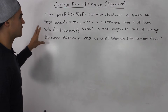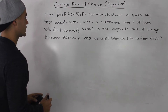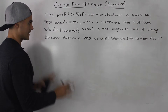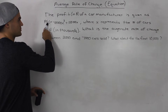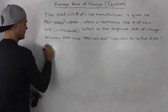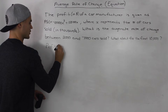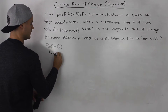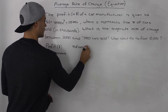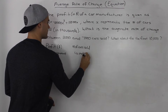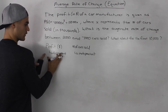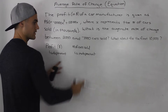Let's start with the first question. The first thing you want to figure out in a question like this is what's the dependent variable and what's the independent variable. Since profit is measured in terms of the number of cars sold, the profit depends on the number of cars sold. So profit, measured in dollars, is the dependent variable. Average rate of change is the amount the dependent variable changes divided by the amount the independent variable changes.